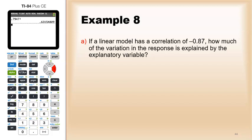So let's do a couple calculations and that'll be it for this lesson. If a linear model has a correlation of negative 0.87, how much of the variation in the response is explained by the explanatory variable?